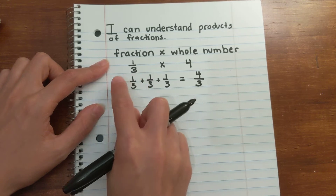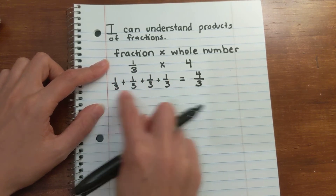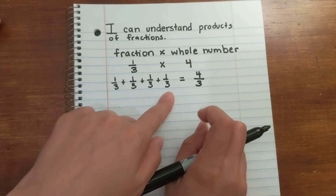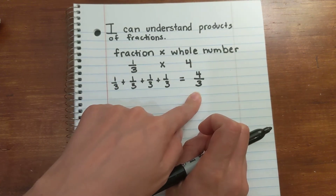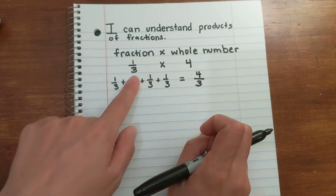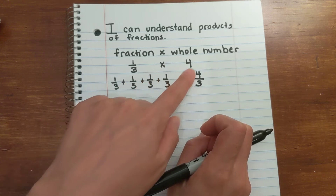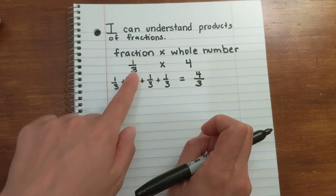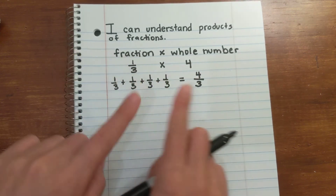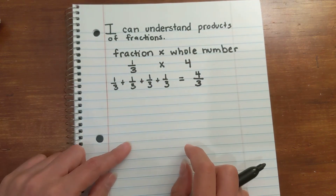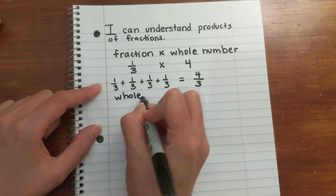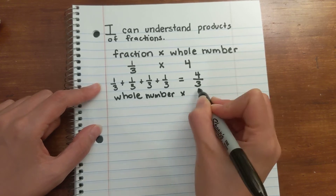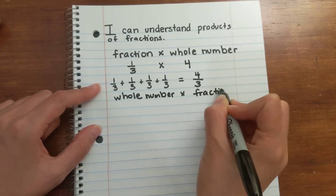That equals 4/3. When we add fractions, you just look at the denominator — you're adding the numerator as long as the denominators are the same. So 1/3 + 1/3 + 1/3 + 1/3 is 4/3. A fraction times a whole number: you can look at it as 'groups of' — four groups of 1/3 or 1/3 four times, either direction.